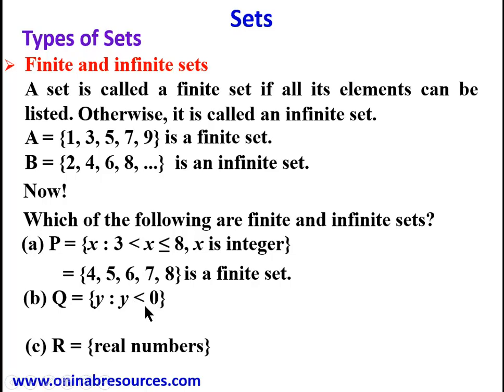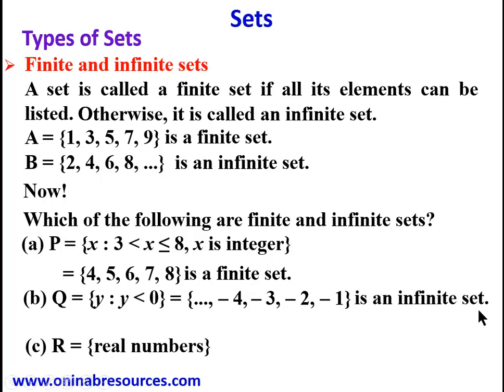For Q, it is the set of Y such that Y is less than zero. Taking Y as an integer, it will start from negative infinity up to negative one, written as {..., −3, −2, −1}. The list continues up to infinity, so this is an infinite set.